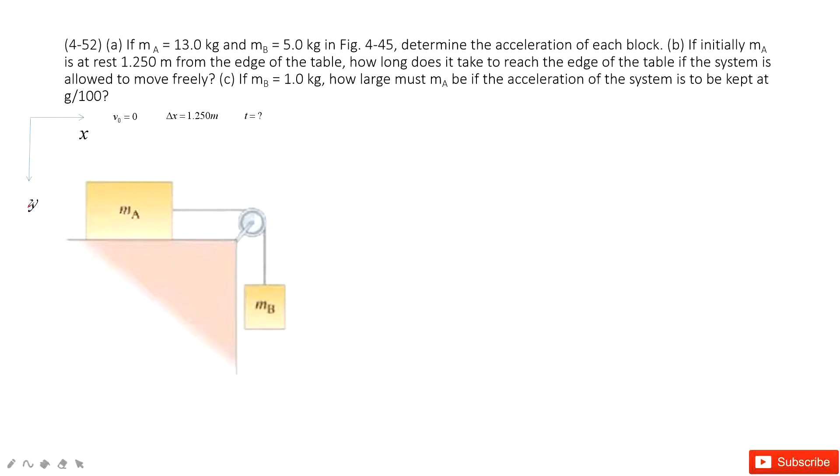And then we draw the free body pictures for objects A and B. First, we look at object B. We have gravity, the tension from the cable. And then we look at object A. We have the gravity, the normal force, and also the tension from the cable.